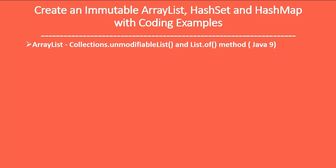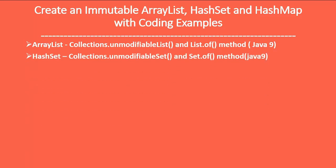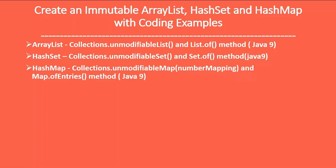We are going to see both ways with a coding example. Similarly for HashSet, before Java 9 we were using Collections.unmodifiableSet() to make a HashSet immutable, and Java 9 provides Set.of() method. For HashMap, we can use Collections.unmodifiableMap() before Java 9, but Java 9 provides Map.of() and Map.entry() methods to make a HashMap immutable.